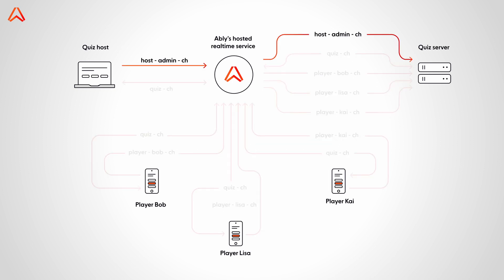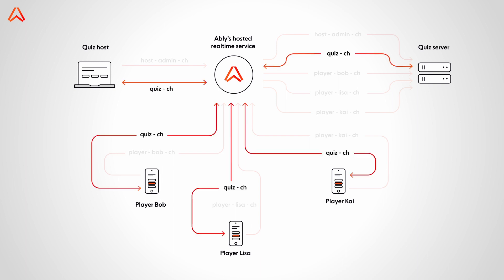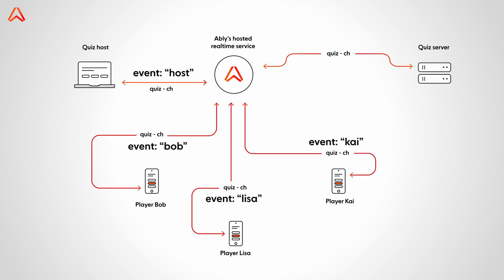First, the host admin channel. This channel is for the host to trigger events on the server like starting the quiz, showing the next question, etc. Participants are not part of this channel — this is how we ensure only the host has admin permissions. Next, the quiz channel. This is the main channel and transports the questions, correct answers, and time attack events. Then there are player channels — dedicated to each player where they publish their responses to the questions. Alternatively, you could use a single channel for all players and identify unique players using an event name. Event names are how you would let the server know which data belongs to which player.